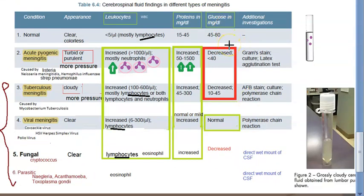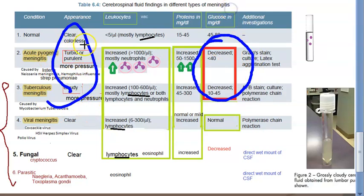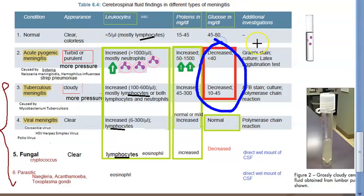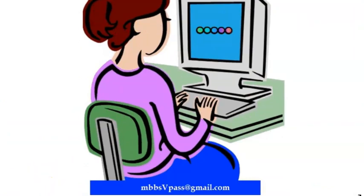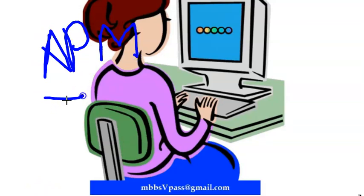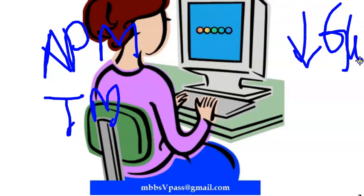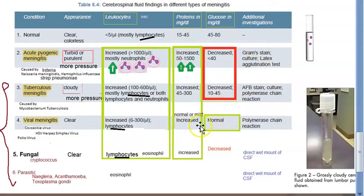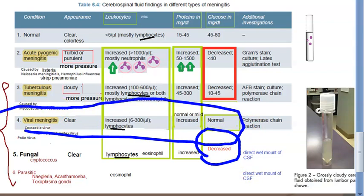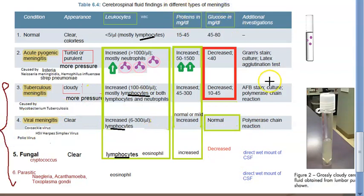For glucose: wherever CSF is cloudy there is more pressure, and glucose will also be decreased. Glucose is decreased in acute pyogenic meningitis and tuberculosis meningitis — the bacteria eat up the glucose. Fungal infections also decrease glucose. In viral meningitis, glucose levels are normal.